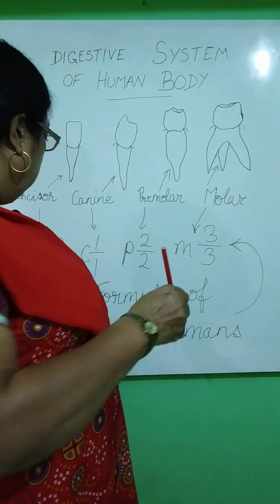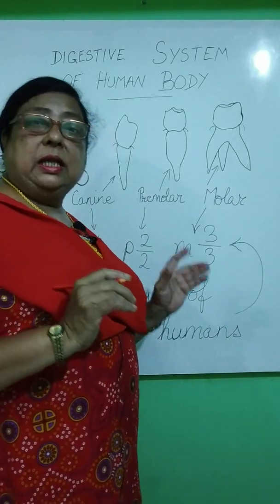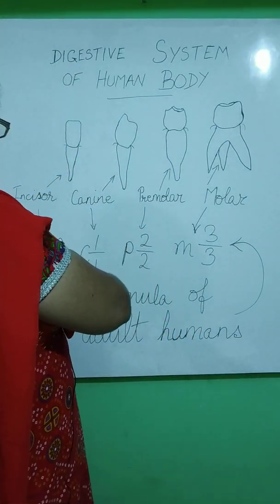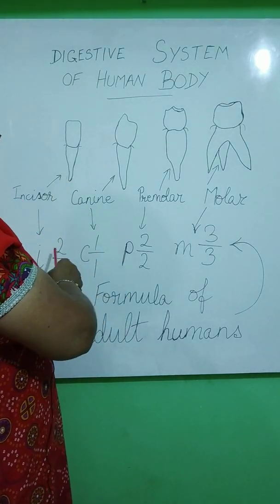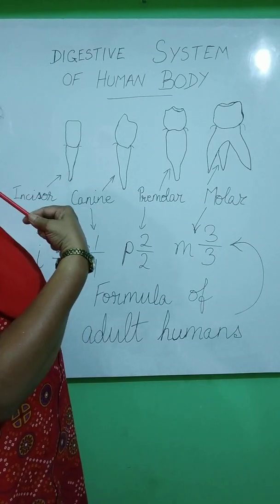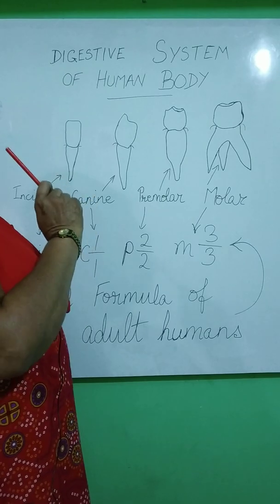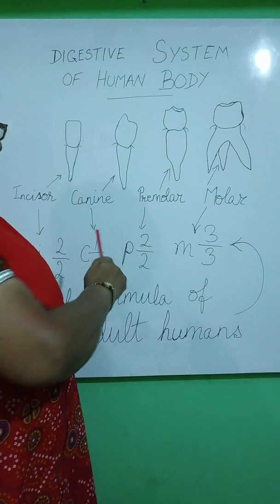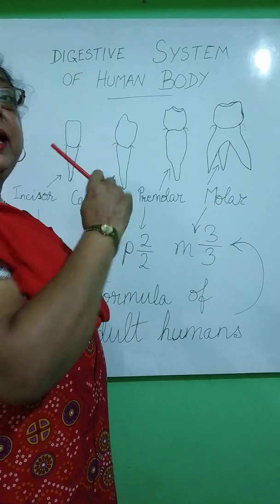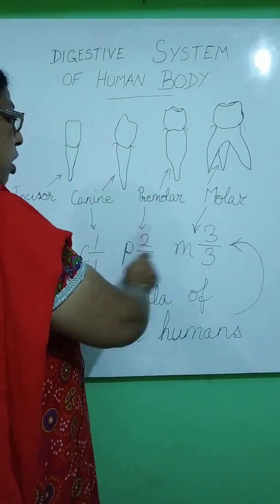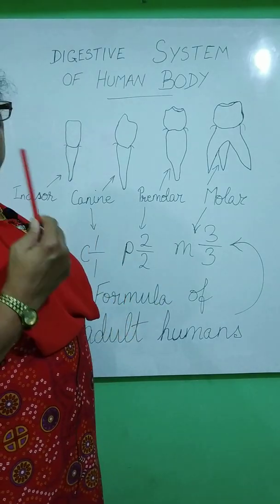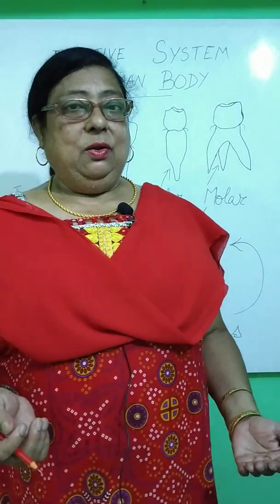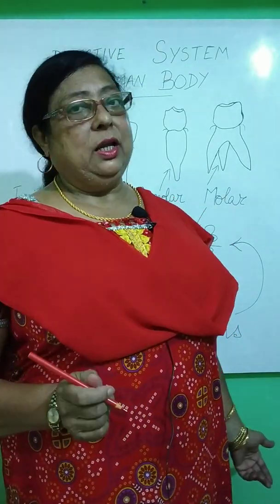The arrangement of teeth is represented by a formula called the dental formula. 'I' stands for incisors — two on each side of the upper and lower jaw. Then canines — one on each side besides the incisors. Then premolars — two on both sides after the canines. And finally molars at the far end of each jaw. This gives a total of 16 teeth on top and 16 at the bottom. The complete process of digestion will be studied in the next class.